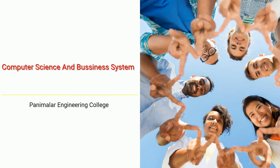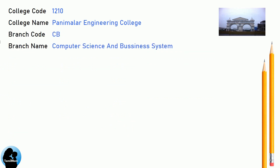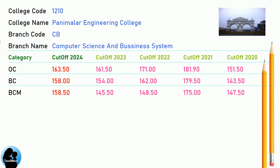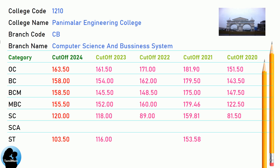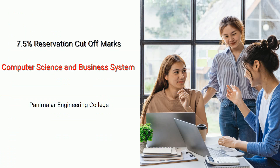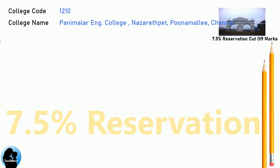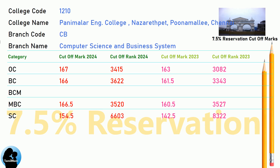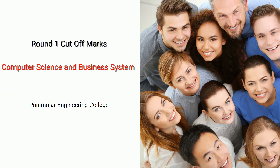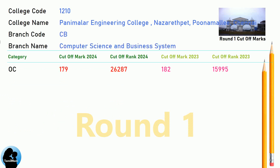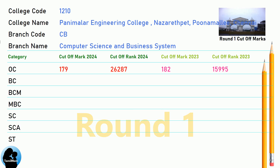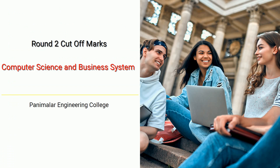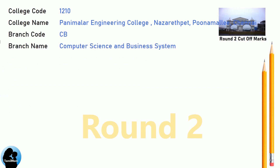TNEA Cut-off for Panimalar Engineering College in Computer Science and Business Systems. TNEA 7.5 Reservation Cut-off for Panimalar Engineering College in Computer Science and Business Systems. TNEA Round 1 Cut-off for Panimalar Engineering College in Computer Science and Business Systems. TNEA Round 2 Cut-off for Panimalar Engineering College in Computer Science and Business Systems.